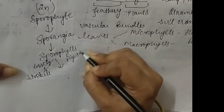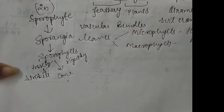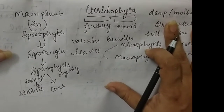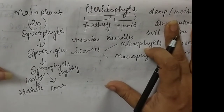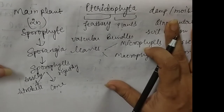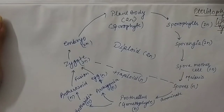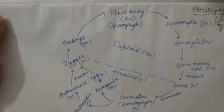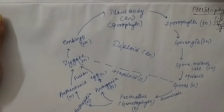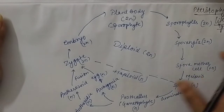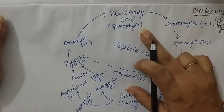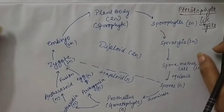Now we will discuss the life cycle of Pteridophyta. I am giving you a life cycle diagram by which you can easily learn all the phases of the Pteridophyta plant. If you want a diagrammatic life cycle, you can write your request in the comment section. The main plant body of Pteridophyta is the sporophyte — it is diploid — and in this plant, sporophylls are present.